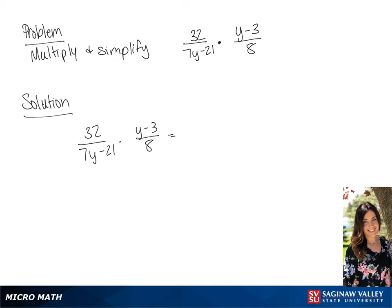We're going to factor the denominator of the first fraction. So we have 32 over 7 times (y minus 3), times (y minus 3) over 8. Since (y minus 3) over (y minus 3) is 1, we can cross both of those off.